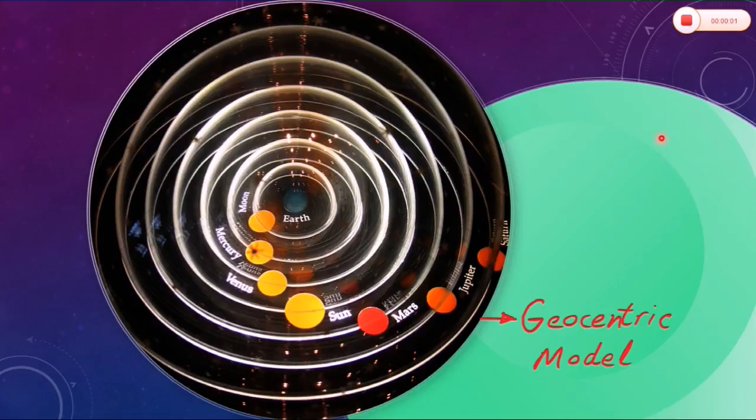Most ancient Greek astronomers believed that the Earth was the center of the solar system and the universe, with everything orbiting it. This is called a geocentric model, as shown here.